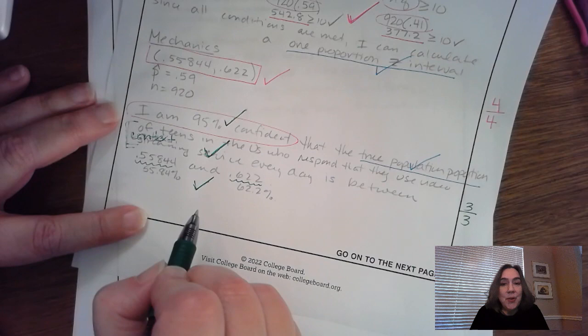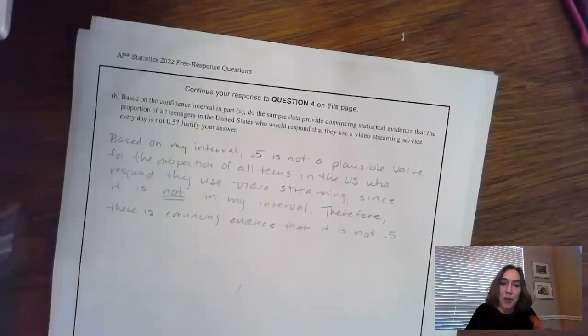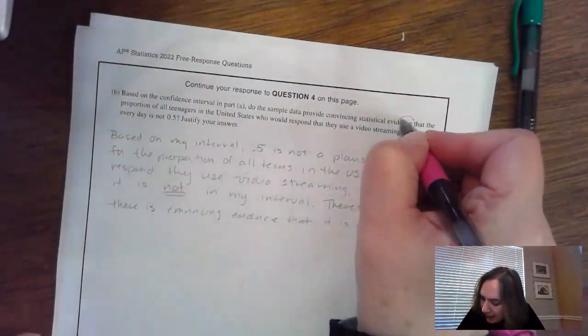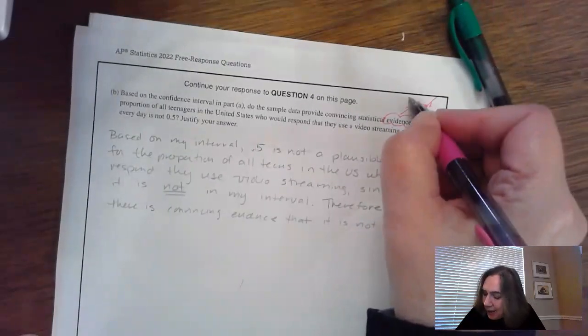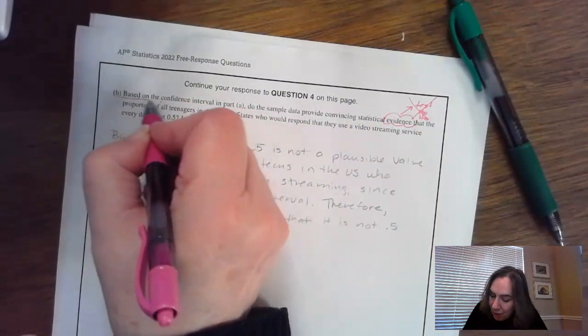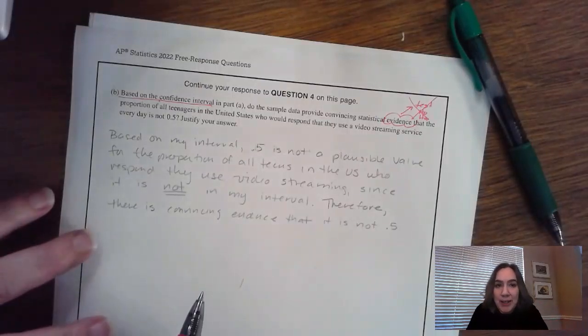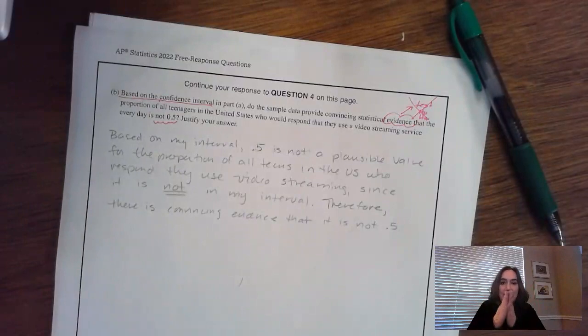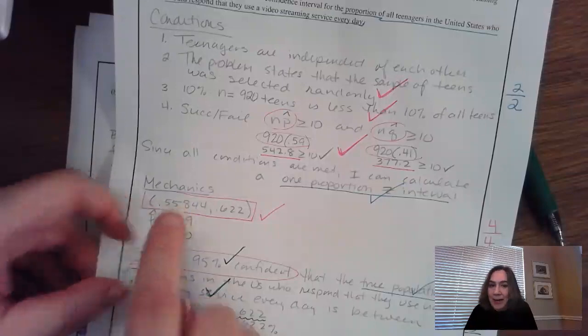So moving on, the last part B is section four. And part B says that based on the confidence interval, so that means we're using the interval we just calculated, do we have evidence? Usually when you see the word evidence, usually we're going to go ahead and do a test, which means we're going to have a H0 and a Ha. But we're not going to do that here because it says use and base it on your interval. So don't go ahead and do a test right here. Use the interval and make a decision. And they want to see something about that it is not 0.5. So that's the key number you're going to check to see if it's inside or outside of your interval. Now our interval here is from 0.55844 to 0.622. So 0.5 is outside of this interval.